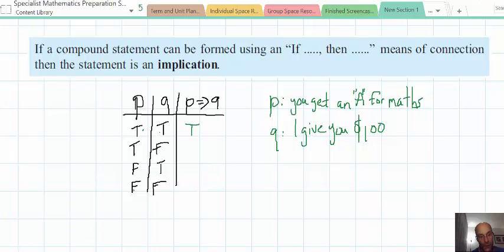Let's zoom down to the last one. It's fairly easy. It's false and false. So, yep, you don't get an A for maths, and I don't give you that $100. Well, that would give a true in the implication column, because it's consistent, and no one's told a lie.